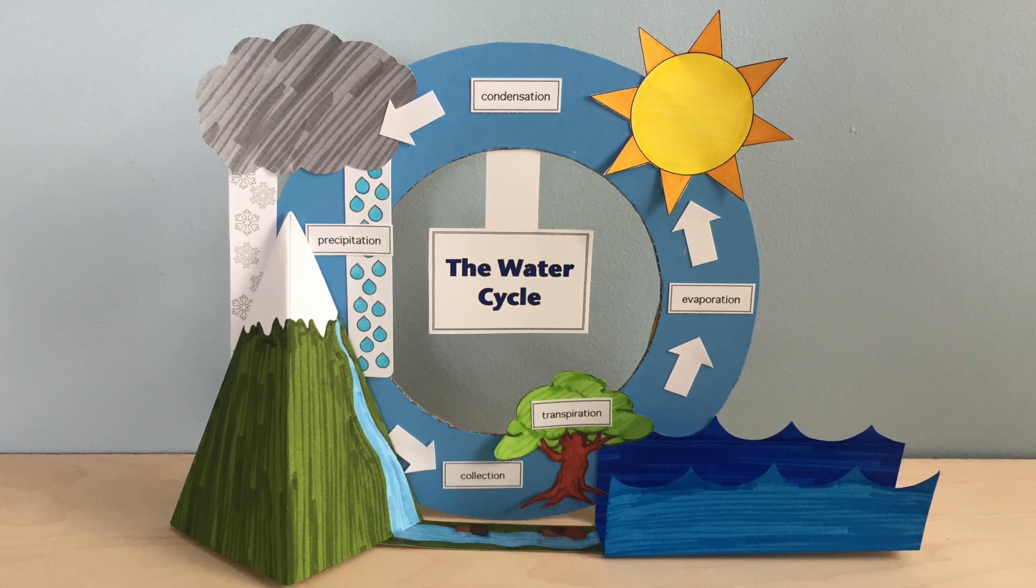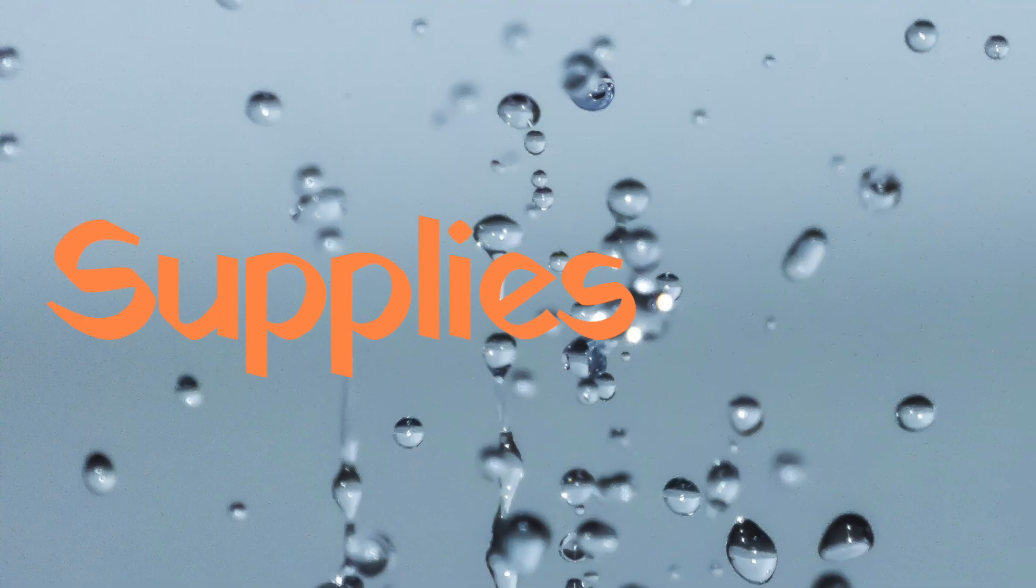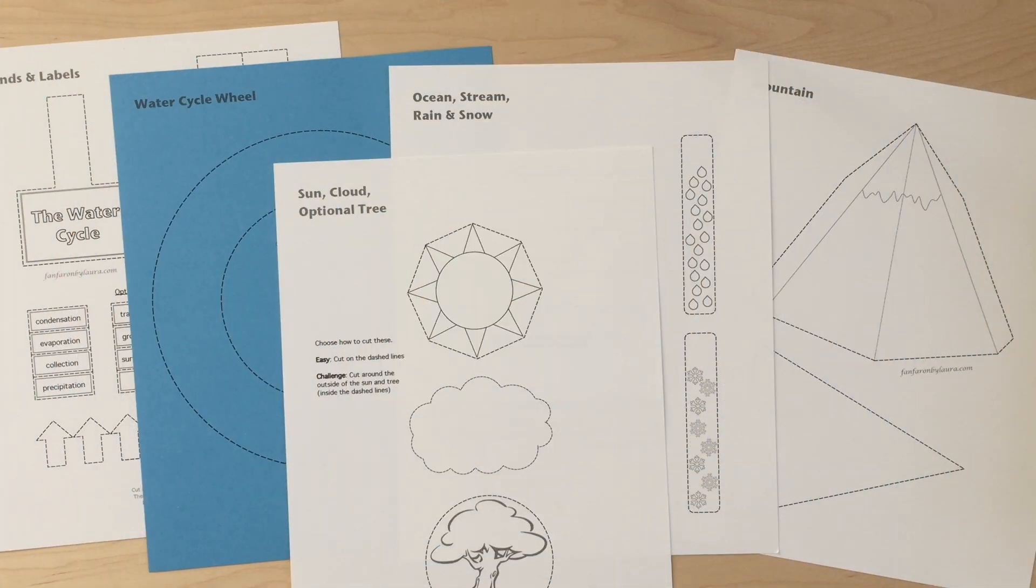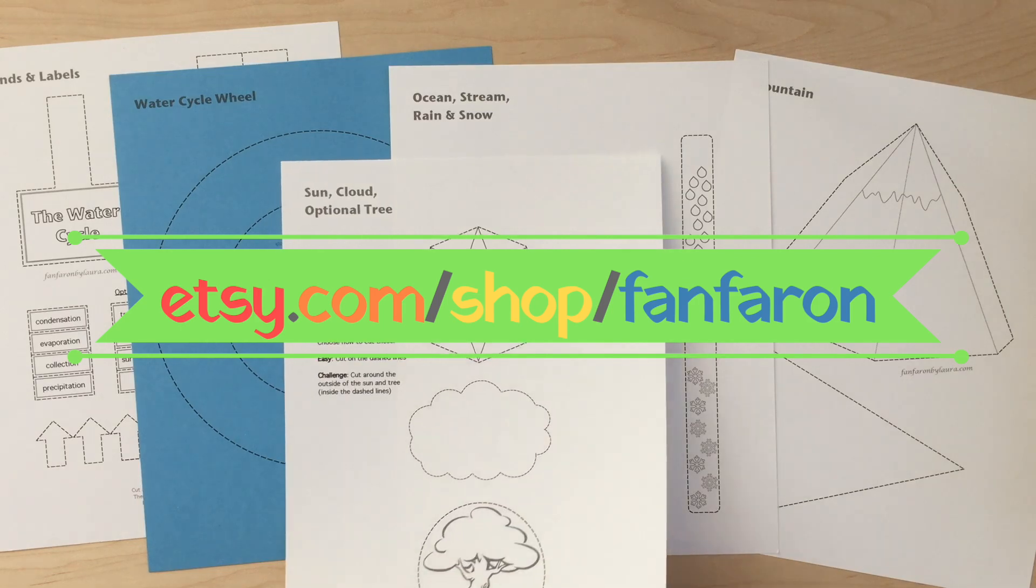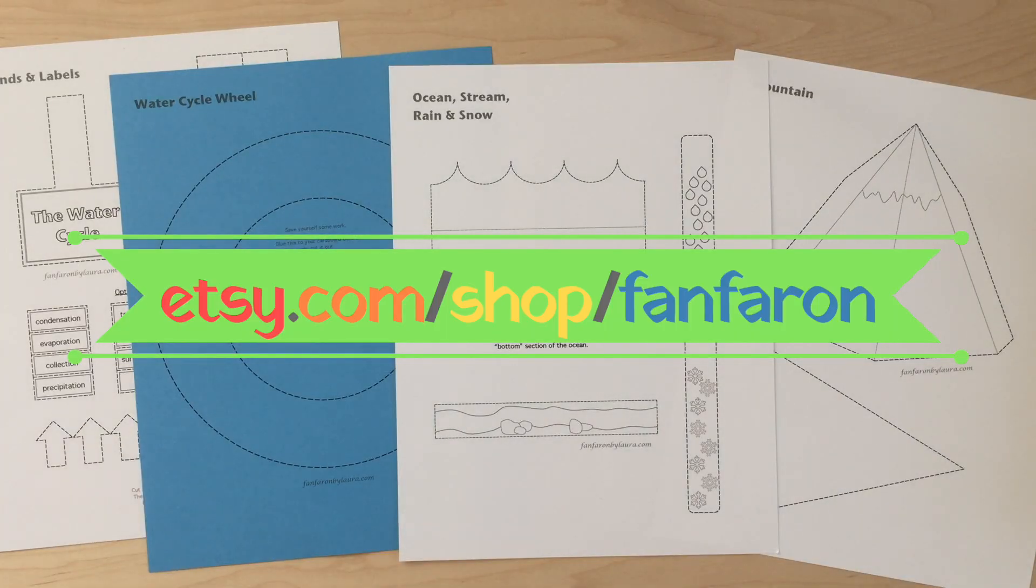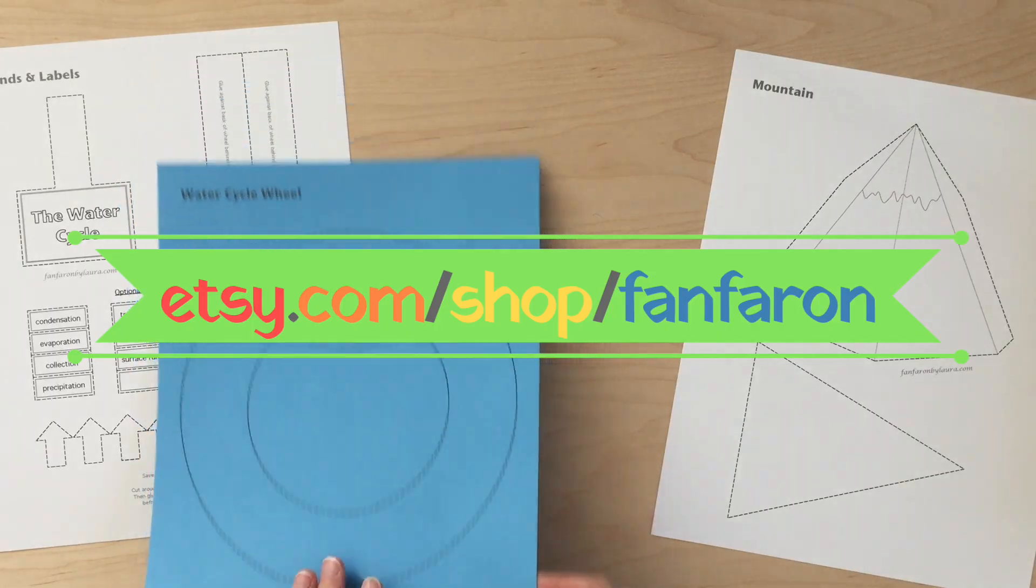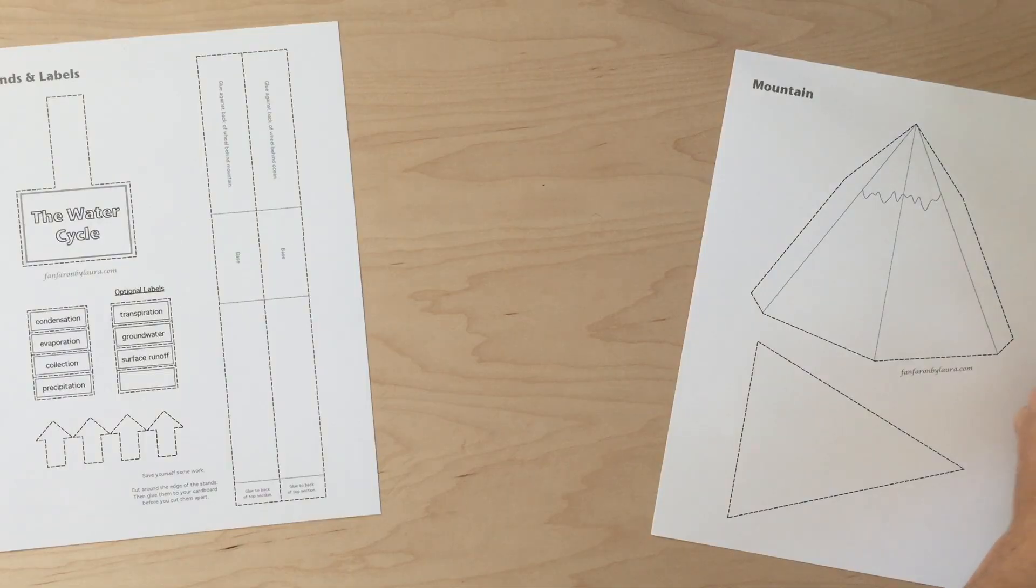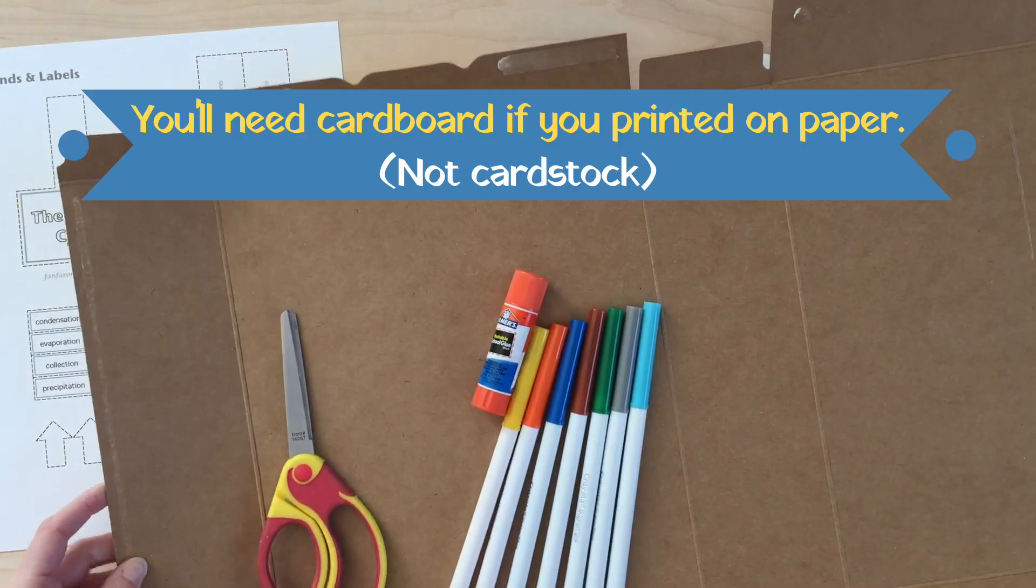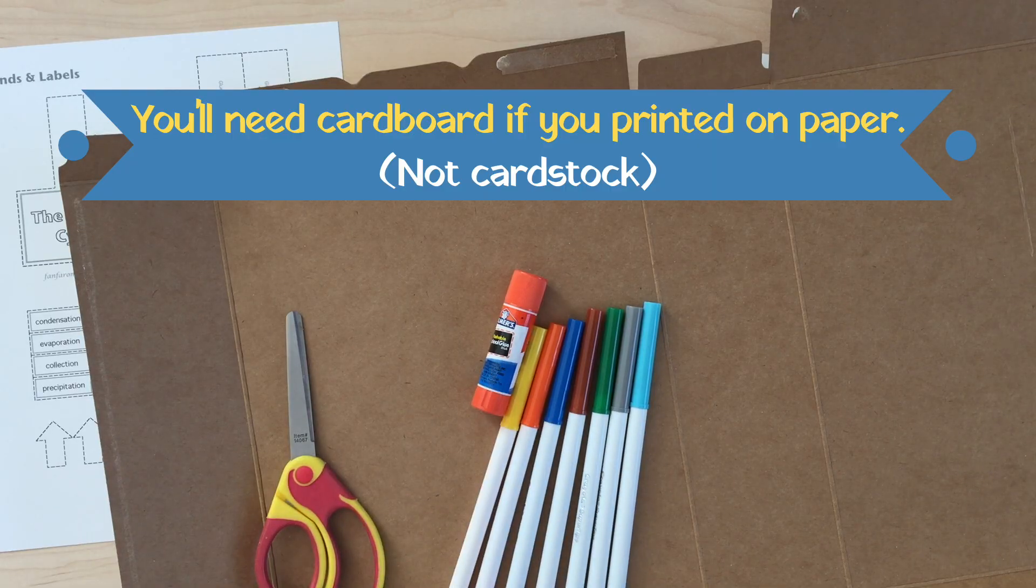First, you'll need to visit my Etsy shop at Etsy.com/shop/fanfor. You'll purchase the water cycle printable, download it to your computer, and then print it on whatever color of paper or cardstock you might like to do the project. You're also going to need a large cereal box, scissors, something to color with, and a glue stick.